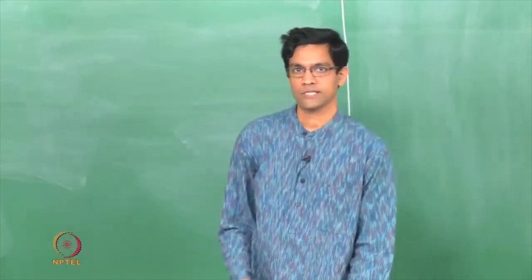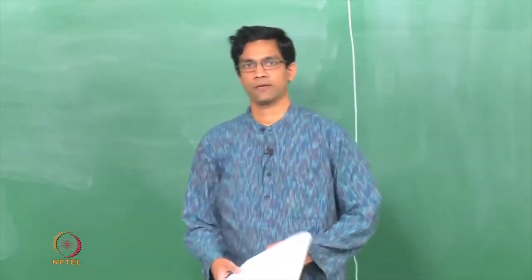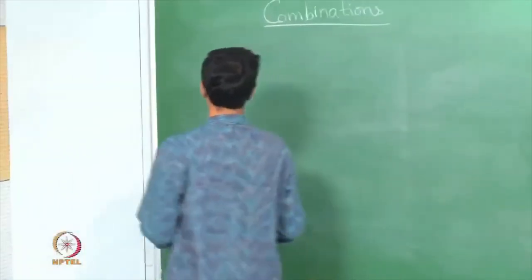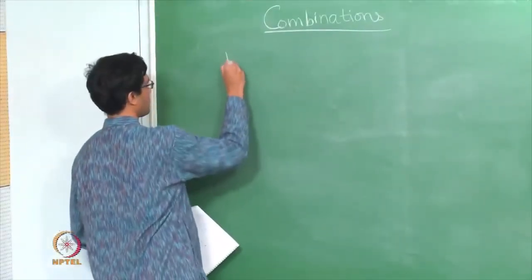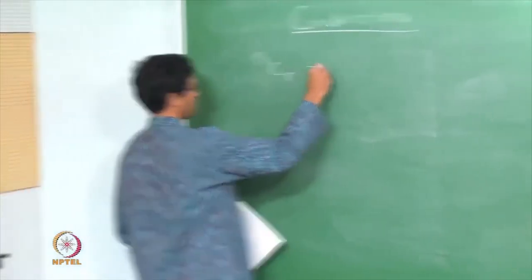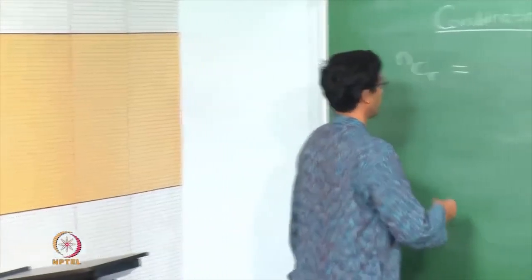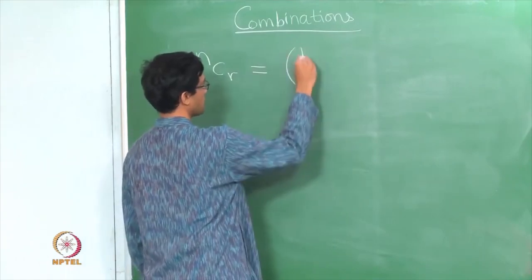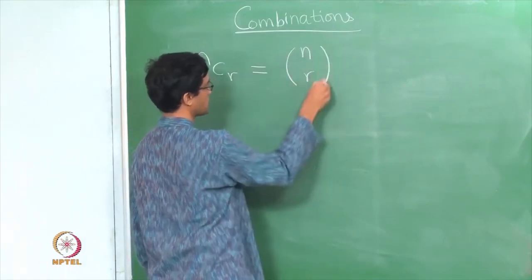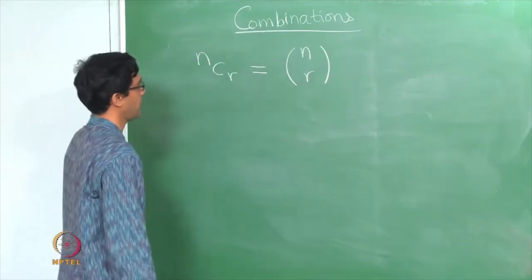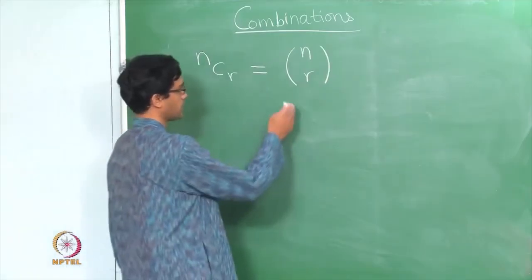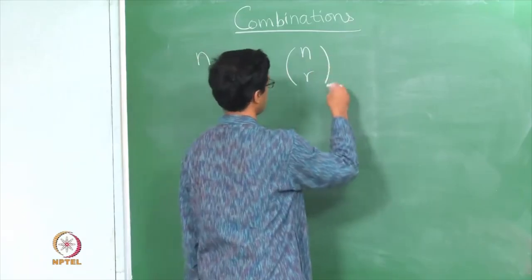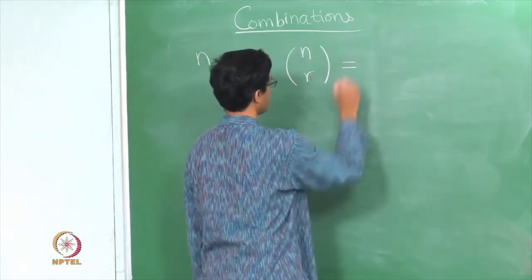Welcome back. Last time we looked at permutations and combinations. I just want to recall the formula here. NCR — sometimes more commonly this is denoted as N within a bracket, like this, and pronounced 'N choose R'. This is notation which is fairly common.